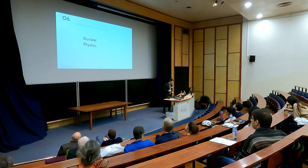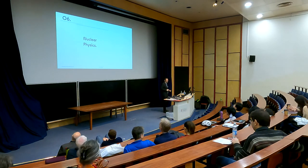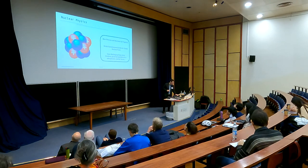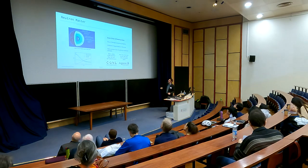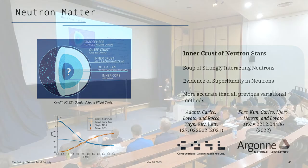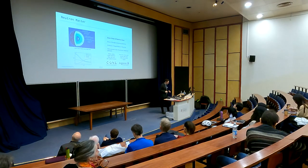I will skip the part on nuclear physics due to time, but briefly: recently we were able to study from first principles, using neural networks, what happens in the inner crust of neutron stars, and showed there is superfluidity of neutrons using these approaches. The details and collaboration with Argonne can be found in the references on the slide.